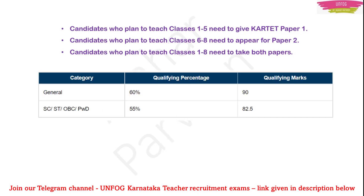Now, one more important thing: what is the qualifying percentage of this exam? Because this is a Teacher's Eligibility Test, one who qualifies will be eligible for government jobs. If you get 60% and you belong to the general category, then you qualify. Out of 150, if you score 90 marks, that will be more than enough for you to clear this exam and you will have the qualifying certificate.